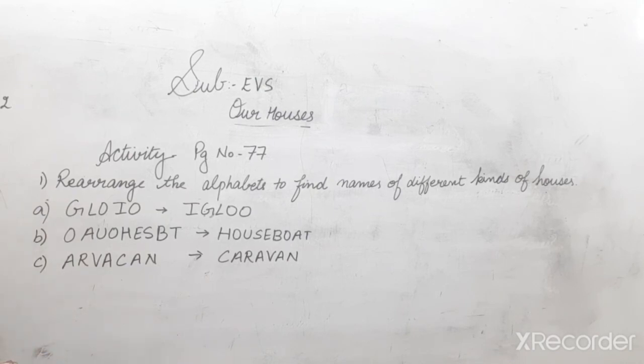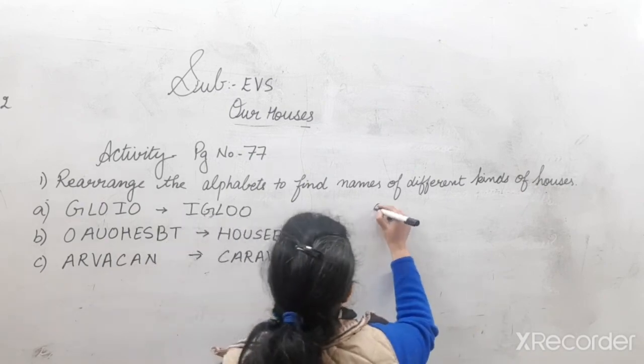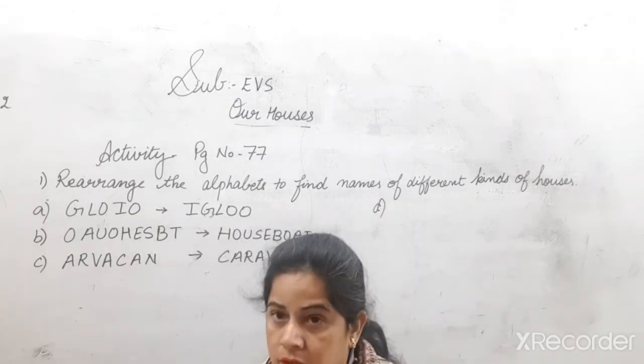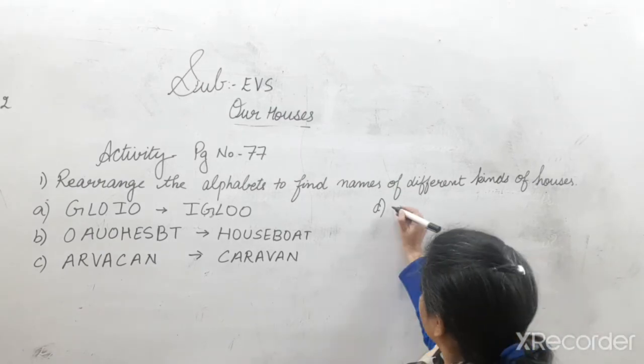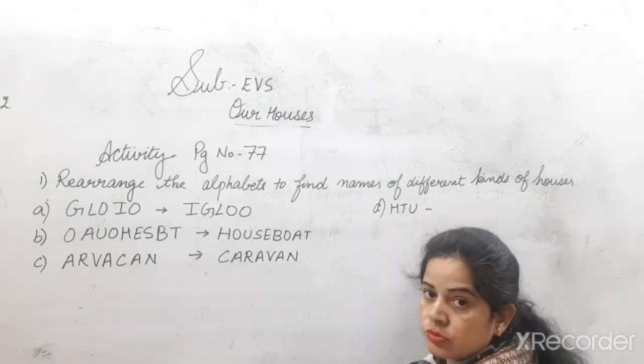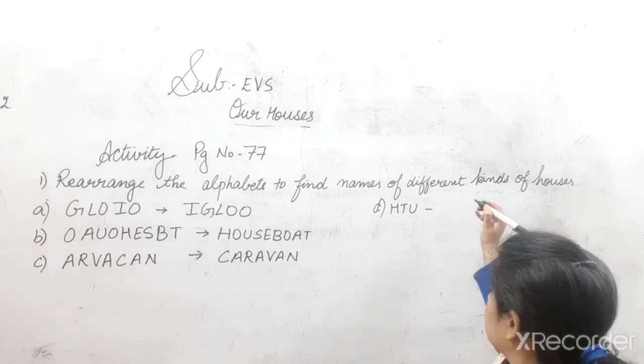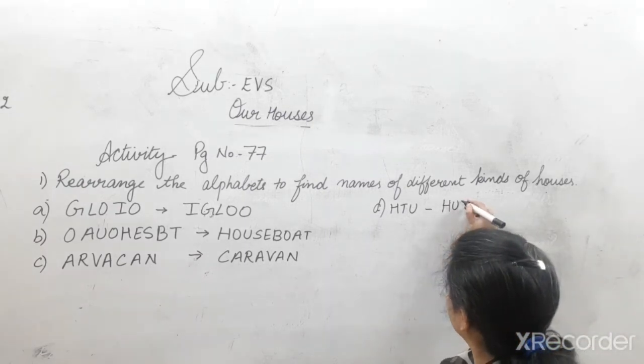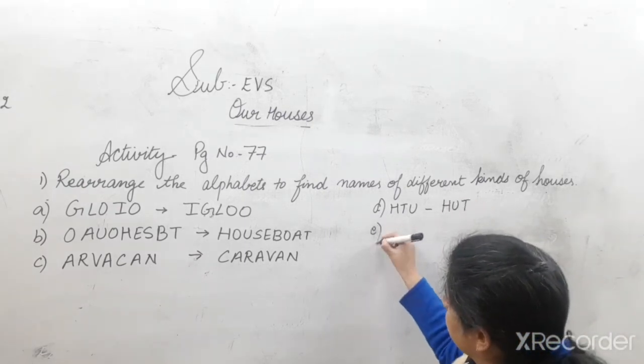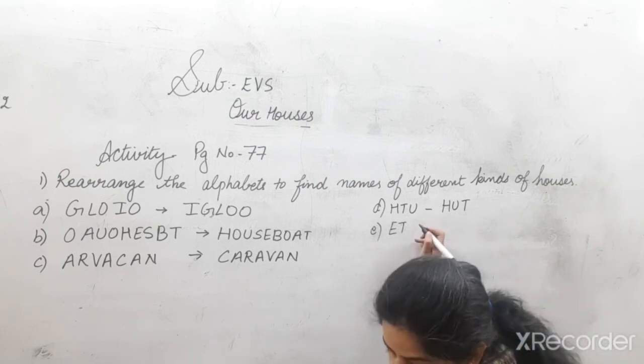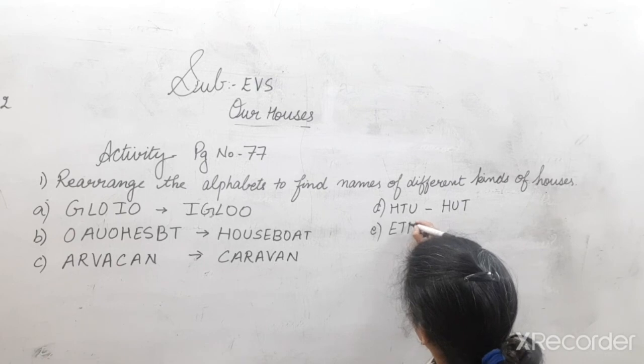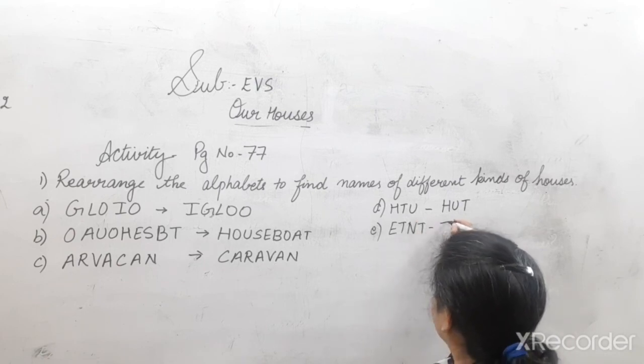Now, D one, I am writing over here. D, H, T, U. It is very simple. H, U, T. Hut. E, E, T, N, T. Very simple. T, E, N, T. Tent.